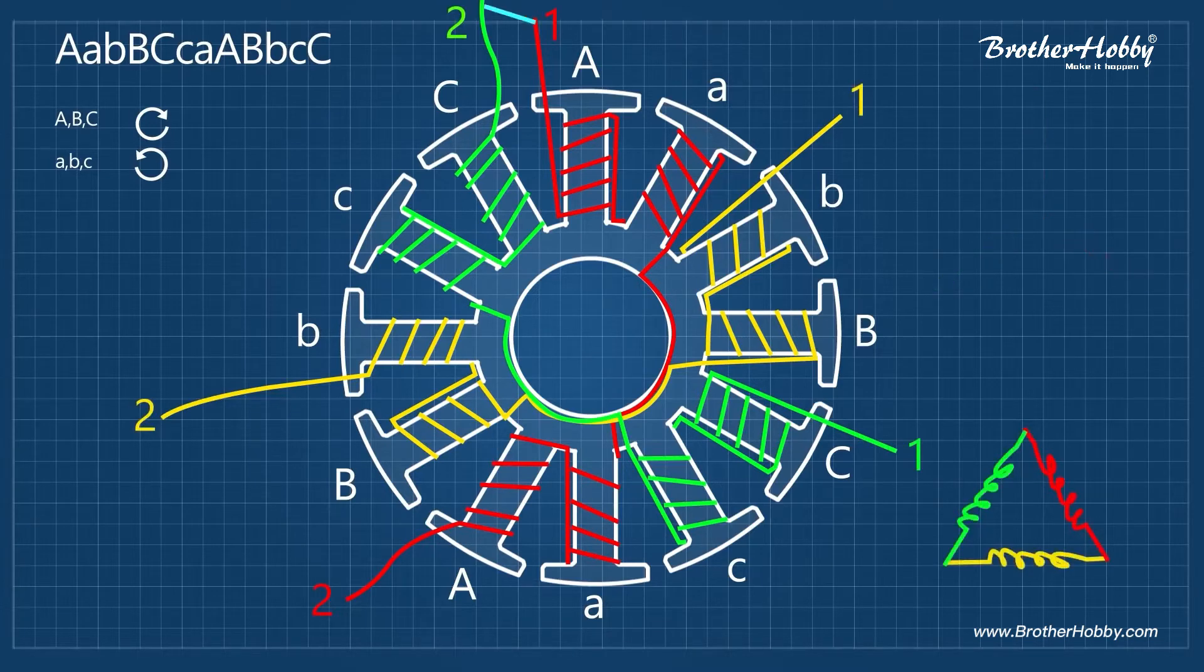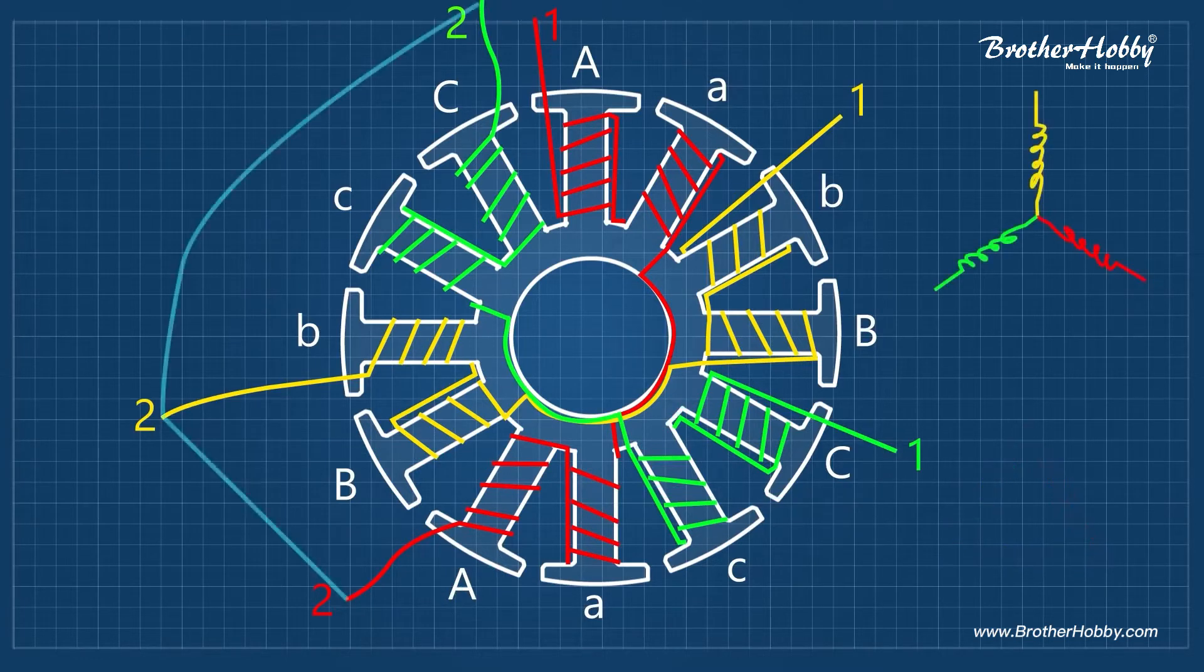With the delta termination you have higher RPMs and less torque. And the Y termination you have less RPMs but more torque. Normally these motors have the Y termination.